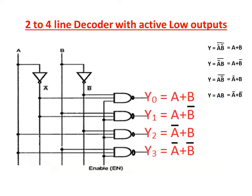This is the logic diagram representation for a 2-to-4 line decoder with active low outputs. The active low outputs are implemented with NAND gates. The output NAND gates give Y0, Y1, Y2, Y3. The enable inputs are active high, and the 2 inputs A, B along with A-bar and B-bar are obtained from inverters.